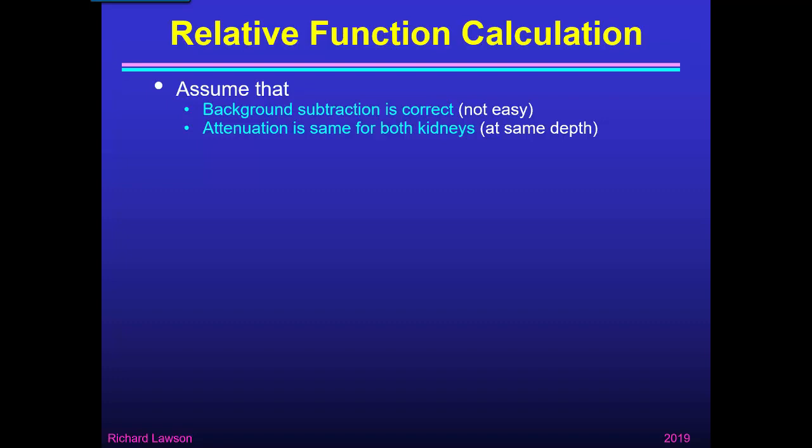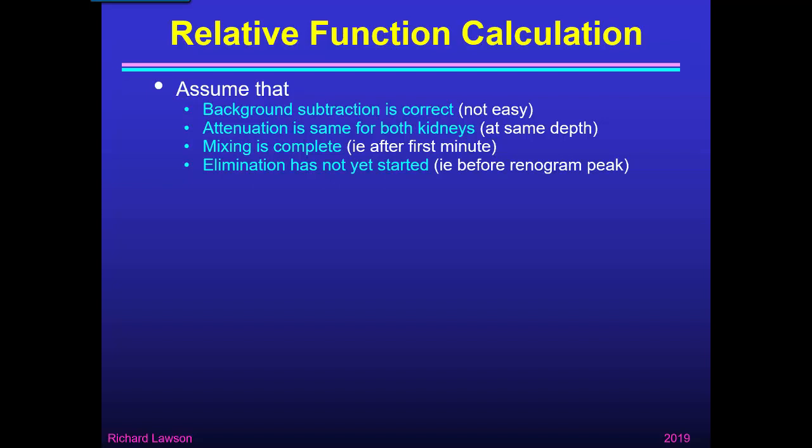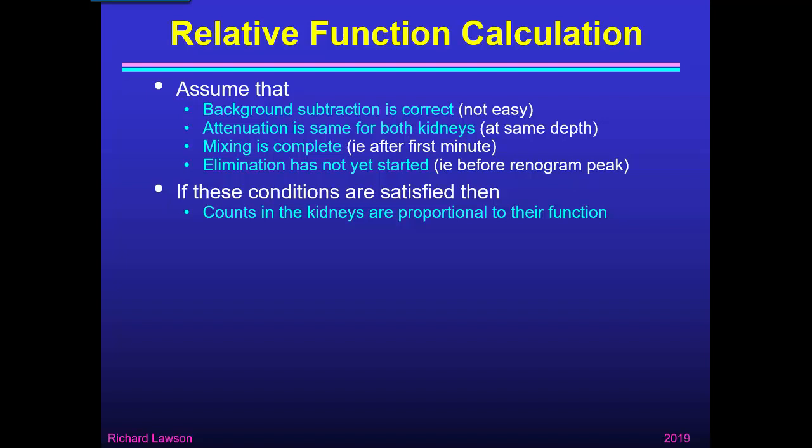If that assumption isn't correct, I will explain how we can deal with that in a separate talk on display of the renogram. Thirdly, we have to assume that mixing is complete. During the first few seconds after injection, mixing of tracer in the blood is not complete, and that means background subtraction may be wrong because the concentration in blood in the background site might not be the same as the concentration in blood in the kidney. So to be safe, we may need to ignore up to one minute after injection. We also need to assume that elimination hasn't yet started — certainly slightly before the peak of the renogram curve.